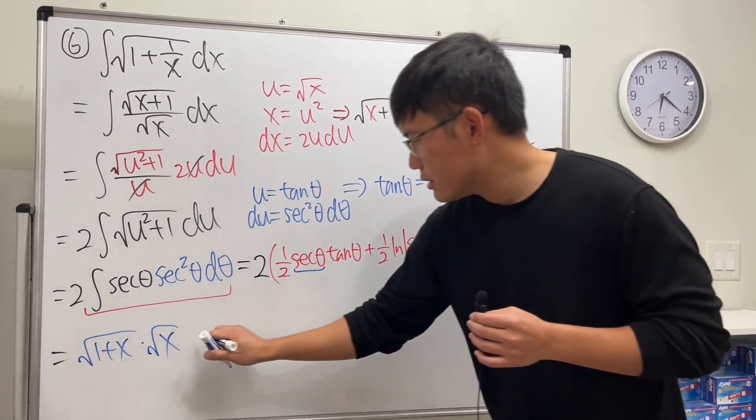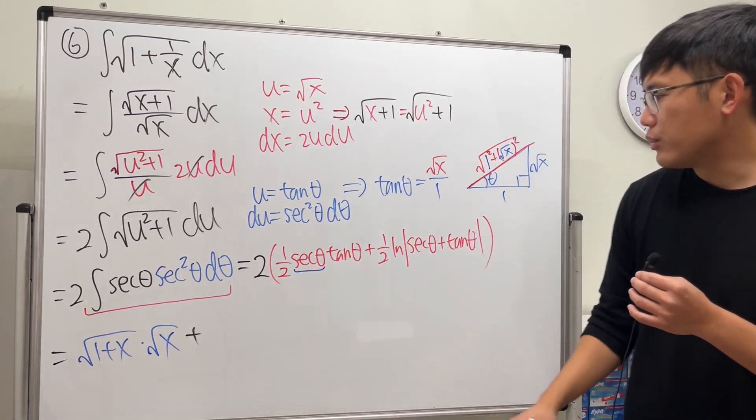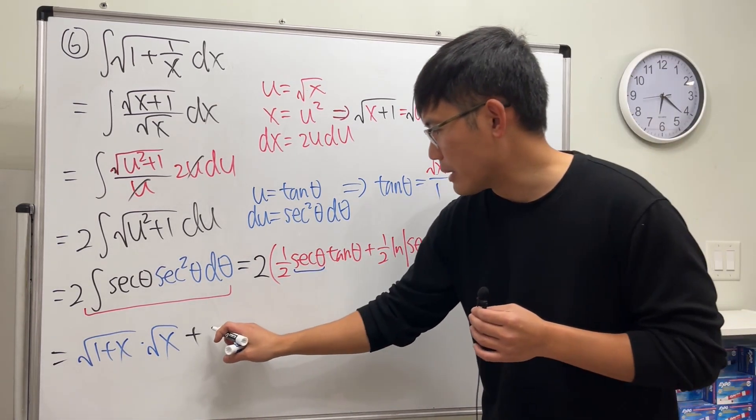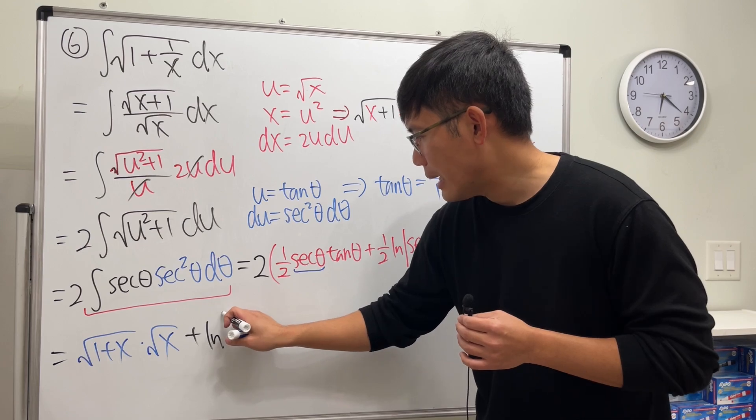And then we add. Again, 1 and 2 cancel, and the rest is pretty much the same thing. So ln absolute value.